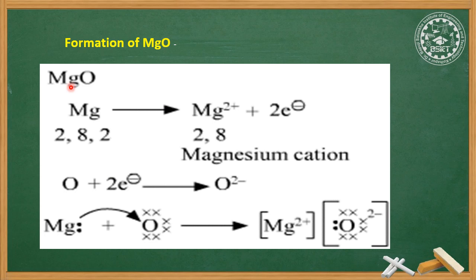Magnesium has atomic number 12, with electronic configuration 2, 8, 2. Its outermost shell has two electrons, meaning its octet is incomplete — it does not have 8 electrons. Magnesium will lose its two outermost electrons to become stable.